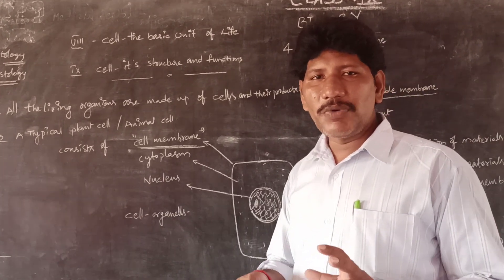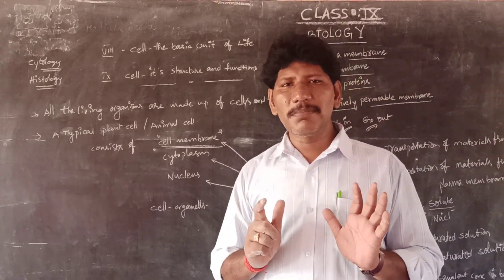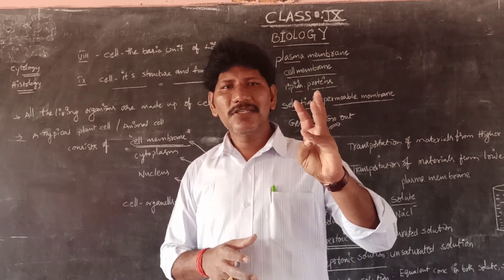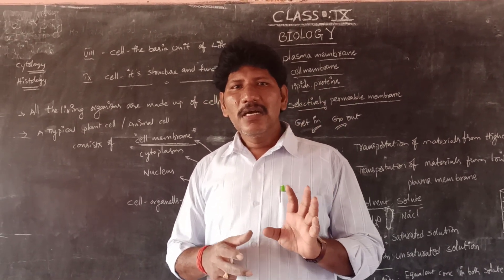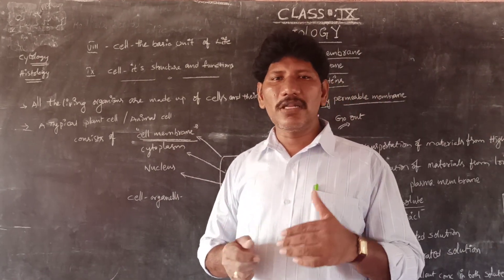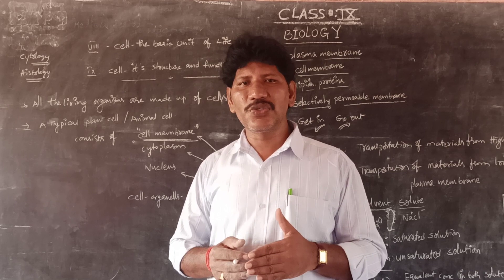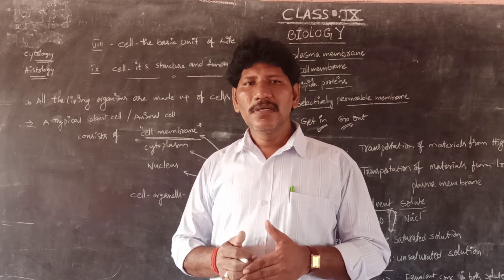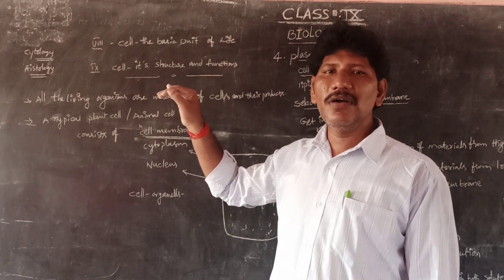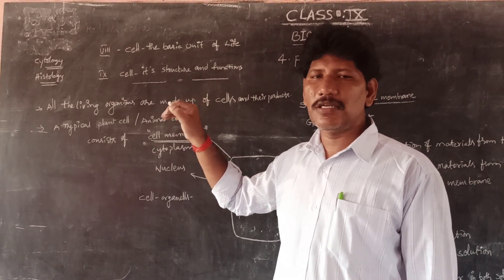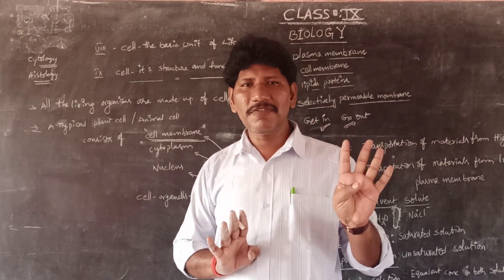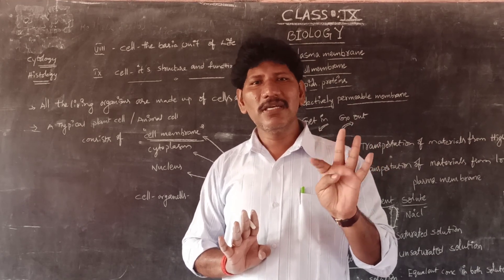Out of 11 chapters in 9th biology, the first four chapters are correlated. Cell, its structure and functions is called cytology or cell biology. The second branch is histology — the study of tissues, or the study of a group of cells. So till now we have discussed about two branches in biology: cytology and histology.